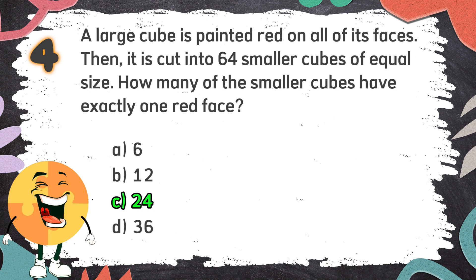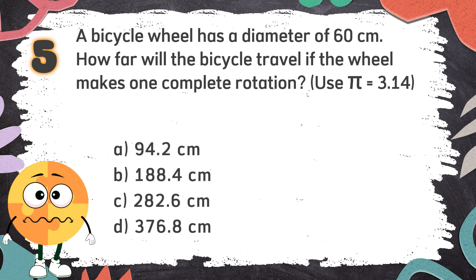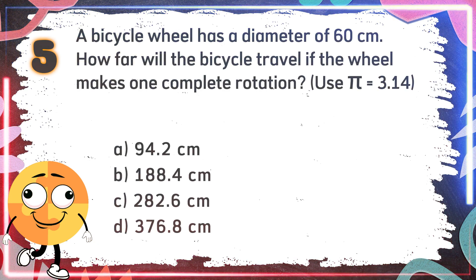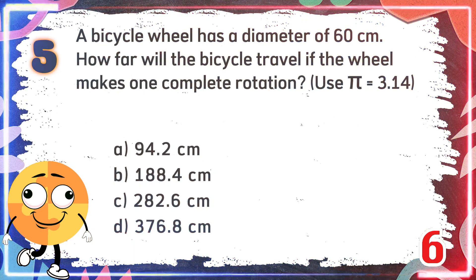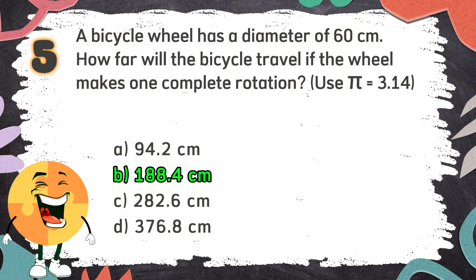The correct answer is C, 24. Number 5: A bicycle wheel has a diameter of 60 centimeters. How far will the bicycle travel if the wheel makes one complete rotation? Use pi equals 3.14. The choices are: A. 94.2 centimeters, B. 188.4 centimeters, C. 282.6 centimeters, D. 376.8 centimeters. The correct answer is B, 188.4 centimeters.